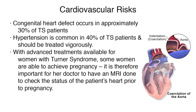There are several cardiovascular risks that are also common with Turner Syndrome patients. Congenital heart defect occurs in approximately 30% of TS patients. Hypertension is common in 40% of TS patients and should be treated vigorously. With advanced treatments available, some women are able to achieve pregnancy. It is therefore important for her doctor to have an MRI done to check the status of the patient's heart prior to pregnancy.